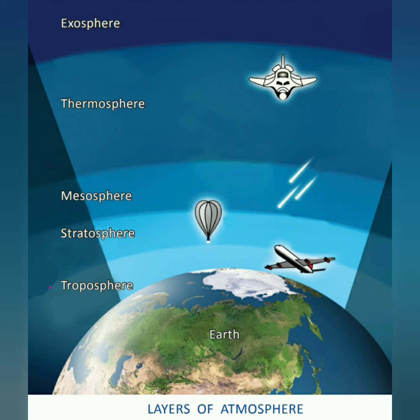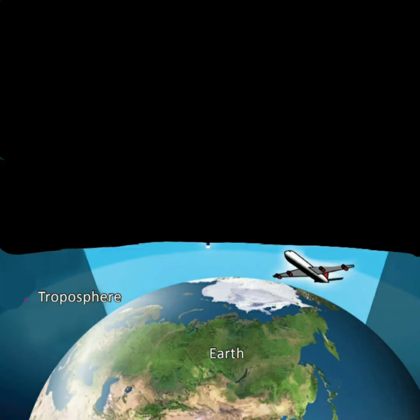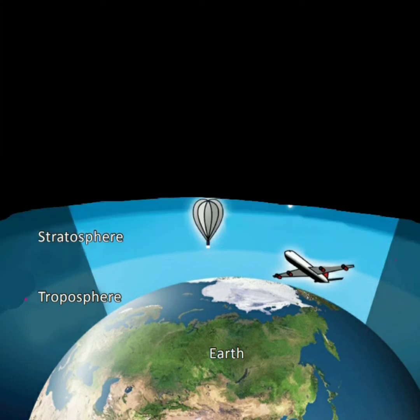You can look at this picture. The first layer just above the earth's surface is the troposphere. All changes in the weather occur in this layer only. The next layer is the stratosphere. Many aircraft fly in this layer.